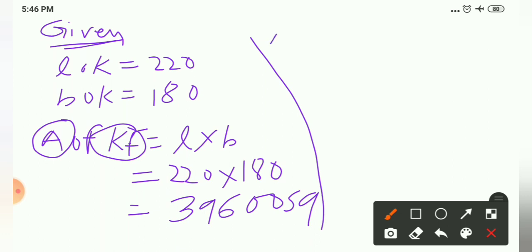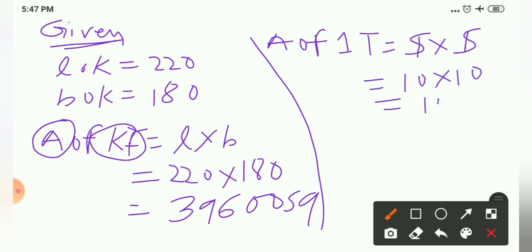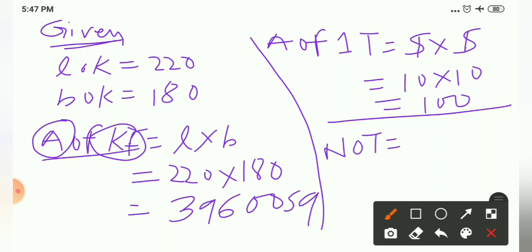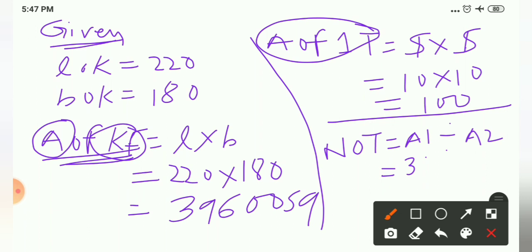Next, we find the area of one green tile: side into side, so 10 into 10 equals 100 square centimetres. Now, number of tiles equals area of kitchen divided by area of one tile, which is 39,600 divided by 100. Cancelling two zeros, we get 396 tiles. So Arbaz will need 396 tiles.